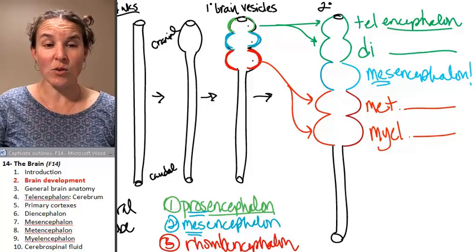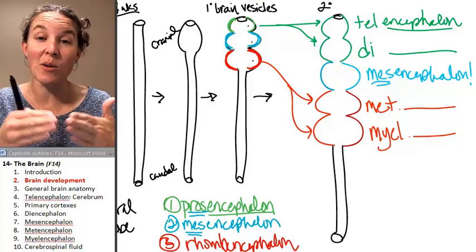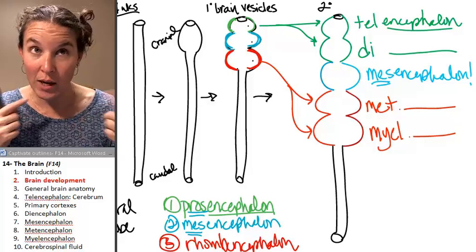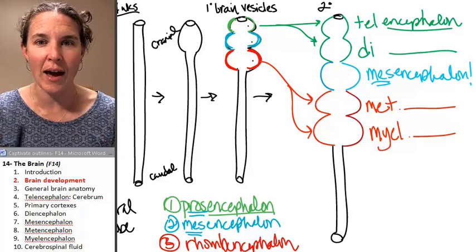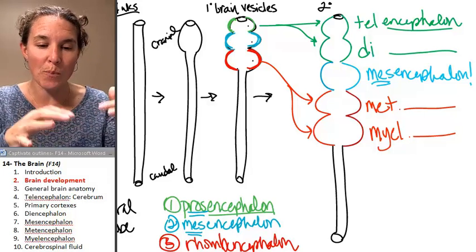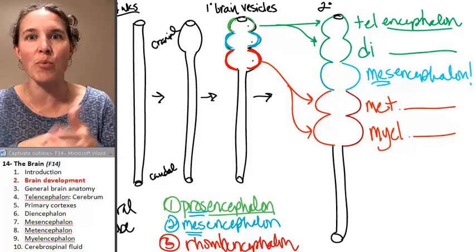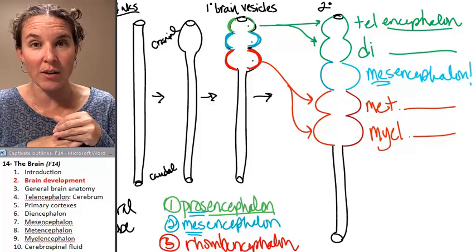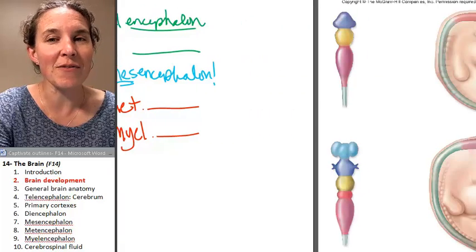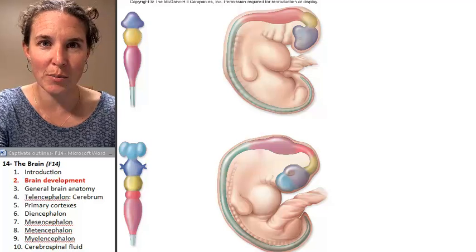Is that the end of the story? Not in a million. In fact, my secondary brain vesicles give rise to mature brain structures that we all have. Most of us have all of them. And we're going to look at which adult brain structures come from each of these secondary brain vesicles.